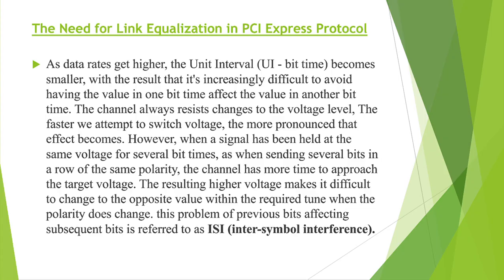PCIe protocol is a high-speed protocol. When you are transmitting data at high speed, the unit interval between the symbols will reduce — the distance between the symbols will reduce. When the distance between symbols reduces, cross-talk will happen, inter-symbol interference will occur, or signal degradation will occur, because you are transmitting data through the link, which contains electrical properties. You are converting binary data to electrical form to transmit through the link.